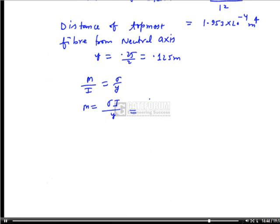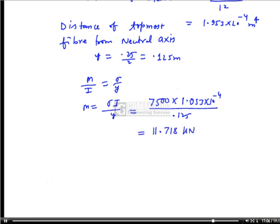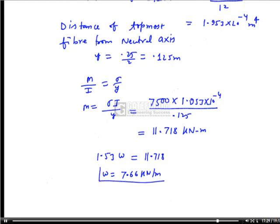With the allowable bending stress of 7500 kN/m², M = 7500 × 1.953 × 10⁻⁴ / 0.125 = 11.718 kN·m. Equating to 1.53·W = 11.718 gives W = 7.66 kN/m. This is the maximum safe UDL the beam can carry.